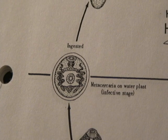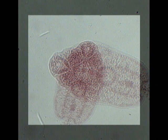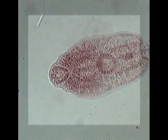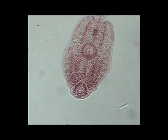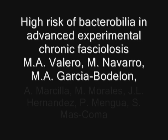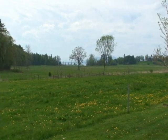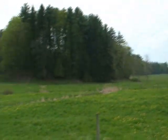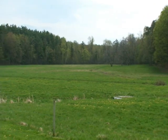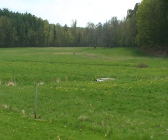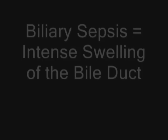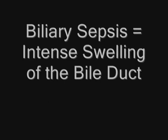Once the metacercaria enter the vertebrate body, there are a number of things that can cause host virulence. The first is the damage done by its journey through the body's tissues on its way to the bile duct. Holes in the liver and other body parts can cause pain, inflammation, and secondary infections. Valero et al. (2006), in a study titled 'High Risk of Bacteriobilia in Advanced Experimental Chronic Fasciolosis,' infected rats with Fasciola hepatica and found that the risk of secondary bacterial infection intensified with infection severity. They also found that obstruction of the bile duct by the fluke is related to biliary sepsis, or intense swelling.